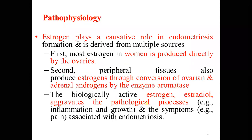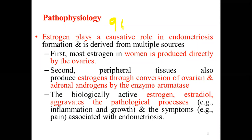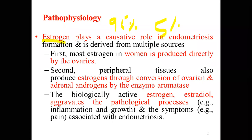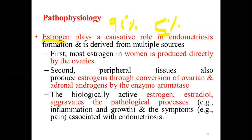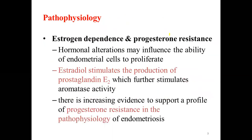This condition is estrogen-dependent. The main source of estrogen is the ovaries — about 95% of estrogen is produced from the ovaries, while 5% comes from aromatization of adrenal androgen. As a result of production of biologically active estrogen, it can aggravate the inflammatory reaction and the growth. So it is an estrogen-dependent inflammatory condition.